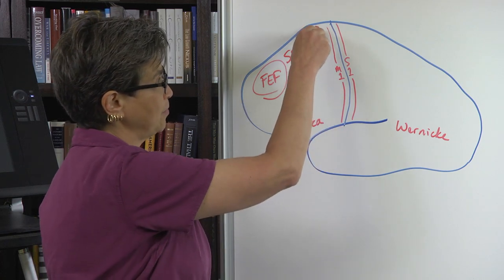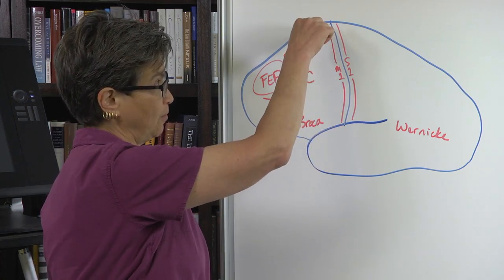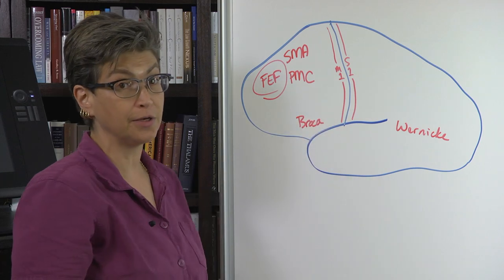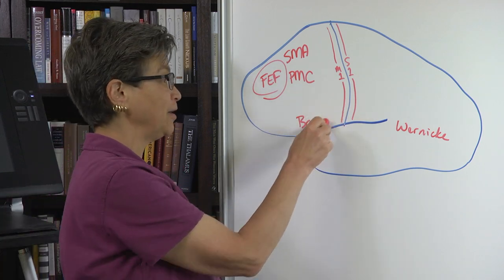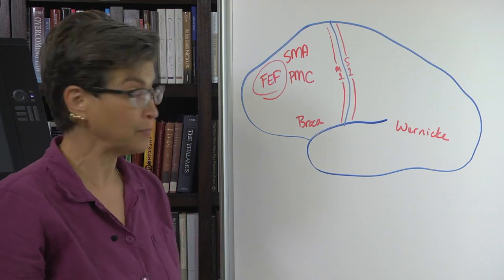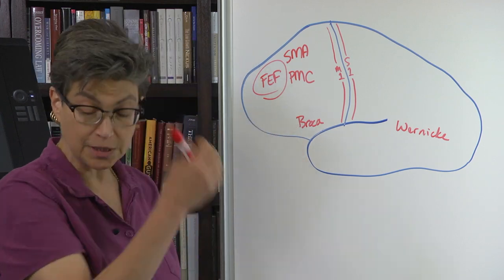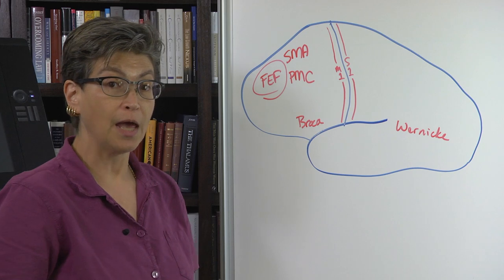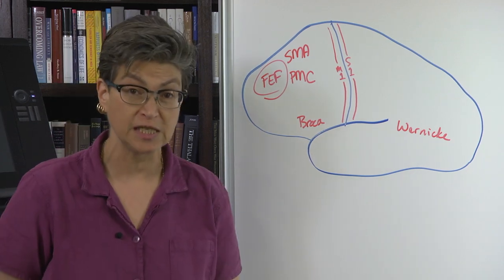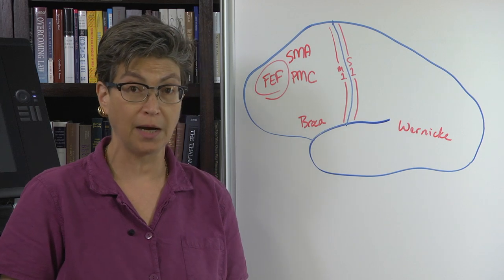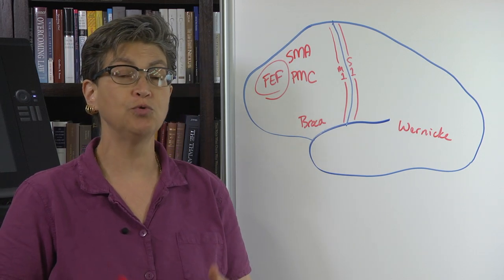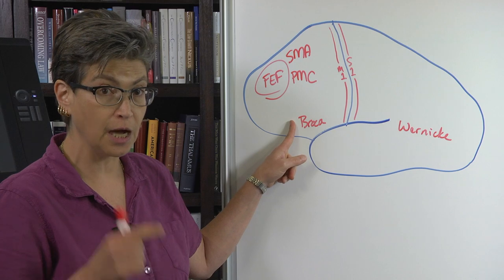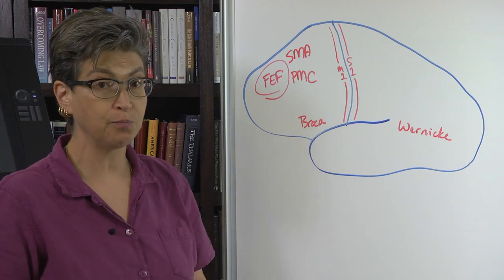Broca's area — remember that the topography of the motor strip goes from legs, trunk, arms, to head. So right in front of the head area is the area required for speech. But this is not just required for speech; it's actually required for language. If you have a lesion in Broca's area and you are a native signer who has communicated by sign language from birth, you will lose the ability to sign. So this is a deficit in language production, not necessarily speech production — a very important point.